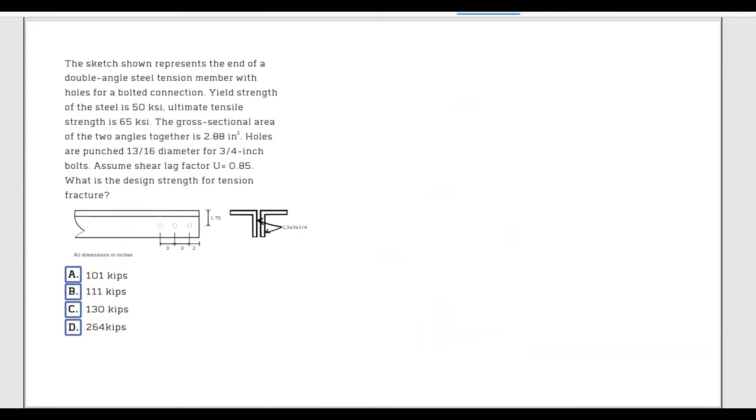The sketch shown represents the end of a double-angle steel tension member with holes for a bolted connection. Yield strength of the steel is 50 ksi. Ultimate tensile strength is 65 ksi. The gross sectional area of the two angles together is 2.88 inches squared. Holes are punched 13 over 16 diameter for a three-quarter inch bolt. Assume shear lag factor equals 0.85. What is the design strength for tension fracture?